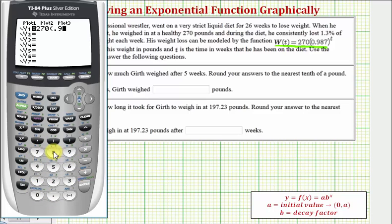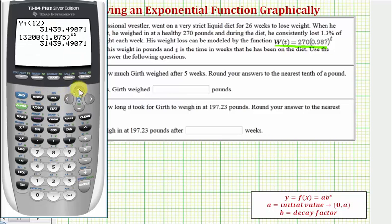And now to find the weight after five weeks, we're going to determine W(5), and because we have our function in Y1, there's a couple ways of doing this. We go back to the home screen by pressing second mode. Let's go ahead and clear this. We can just enter Y1(5) by pressing vars, right arrow, enter, enter.